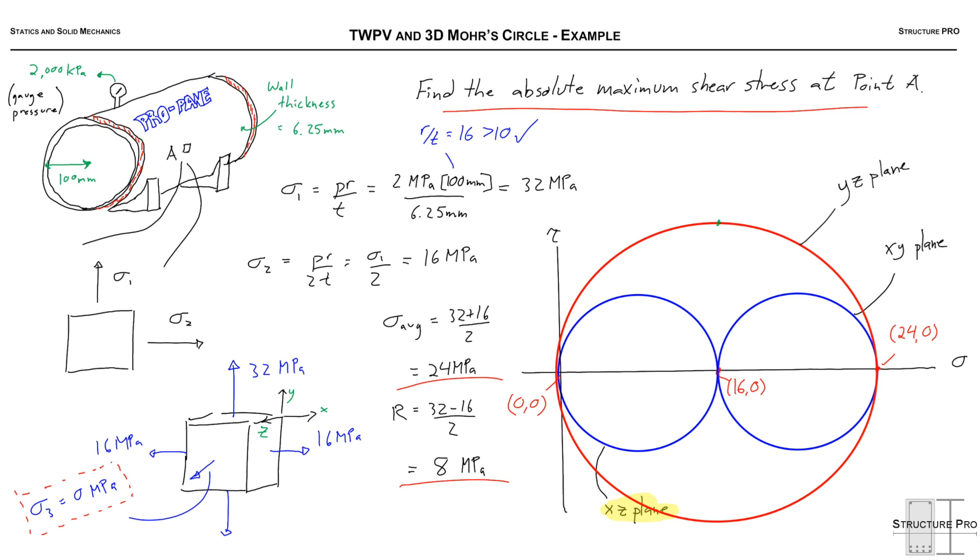Finally, the YZ plane, which is looking at the element from the side along the X axis. We see that we have a 32 MPa up and a zero MPa on the side, and that gives us this biggest circle.